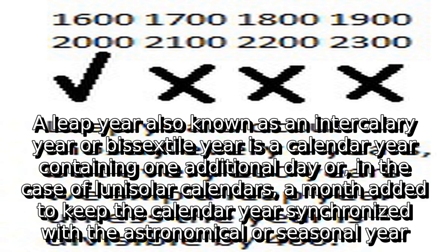A leap year, also known as an intercalary year or bissextile year, is a calendar year containing one additional day, or in the case of lunisolar calendars, a month added to keep the calendar year synchronized with the astronomical or seasonal year.